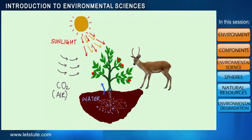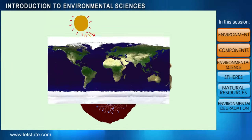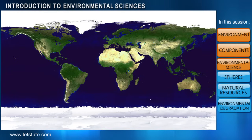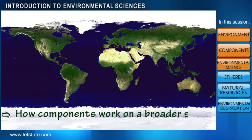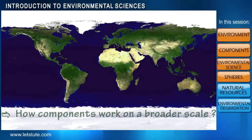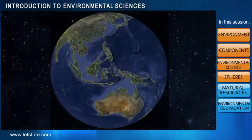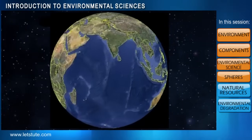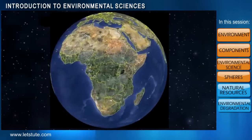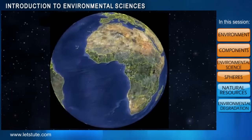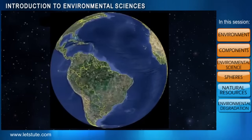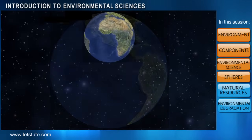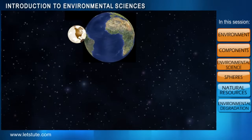Plants are just a small aspect of our environment. If we consider a much broader aspect — planet Earth — let us see how the various components work on a larger scale. I'm sure you have all seen a picture of planet Earth. Although it looks like one large structure, it has many different features.